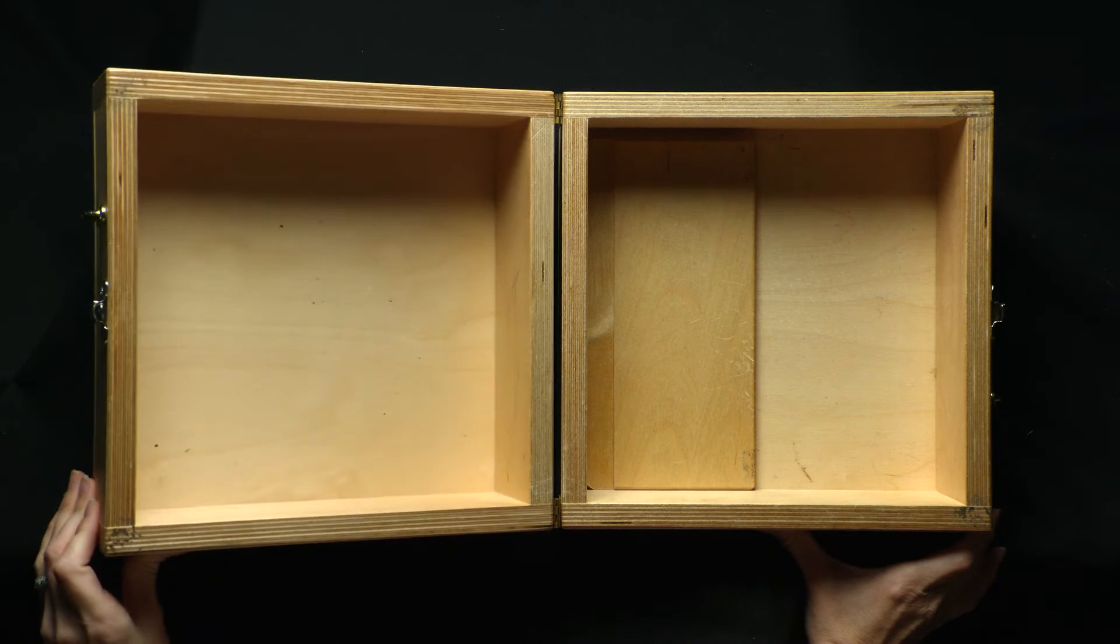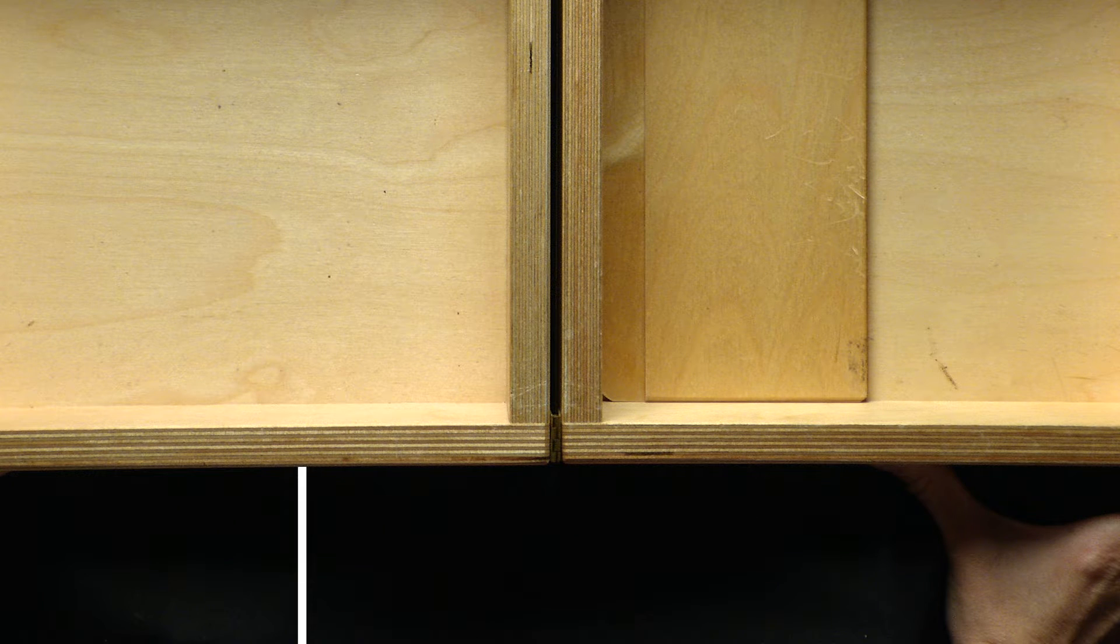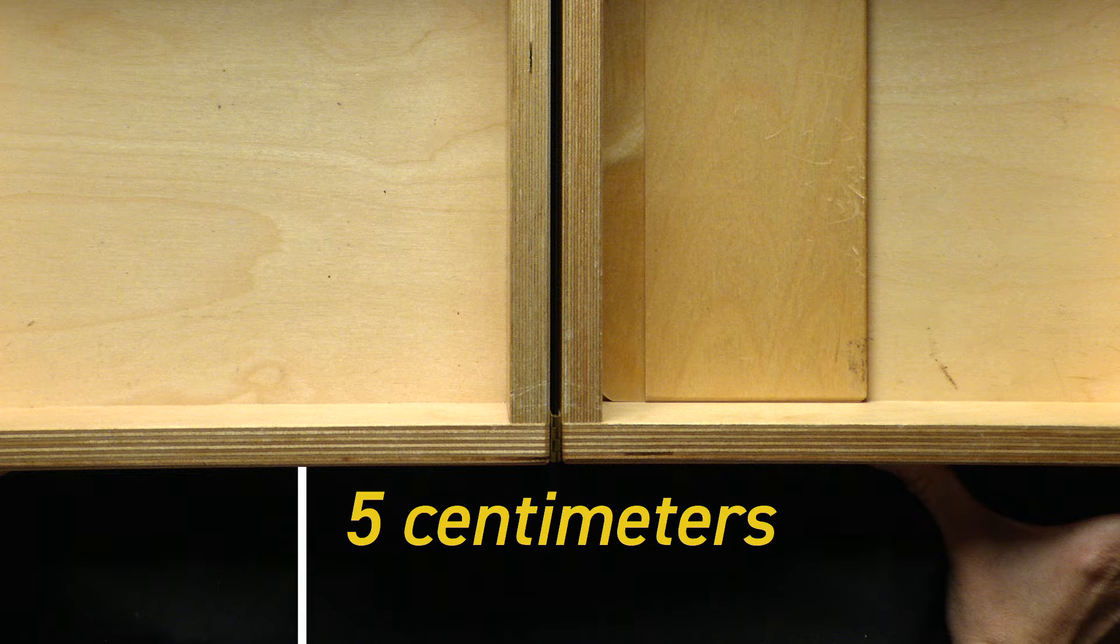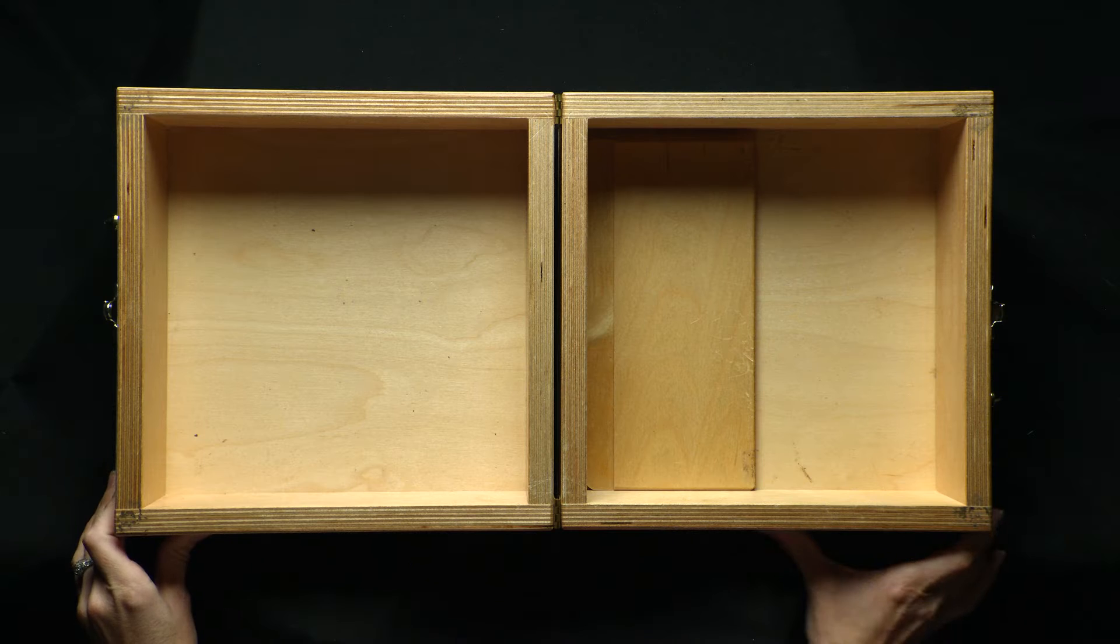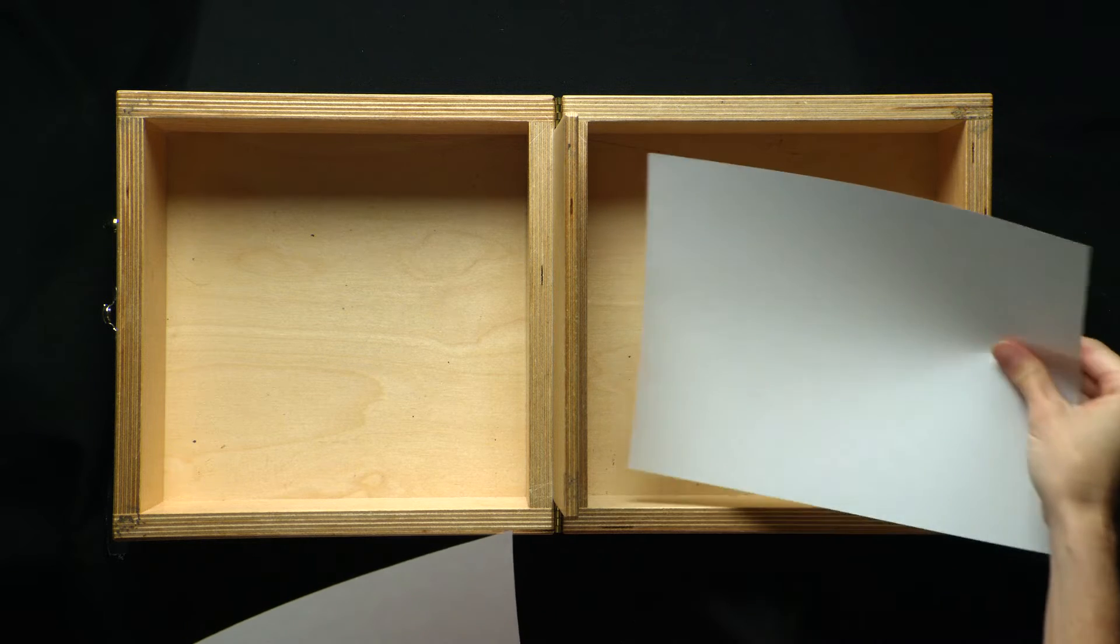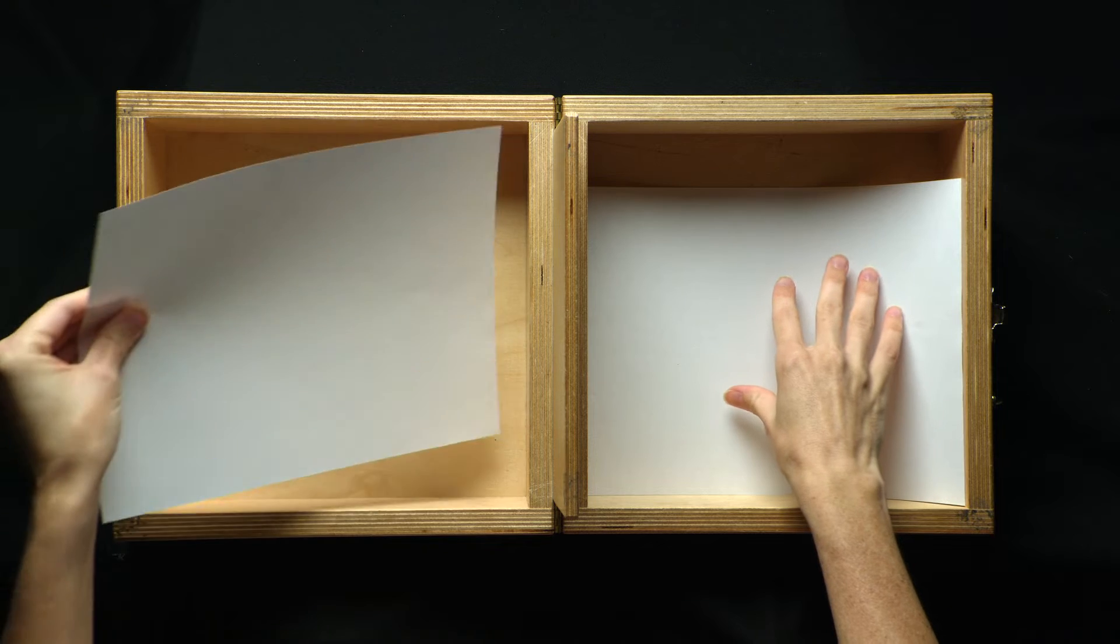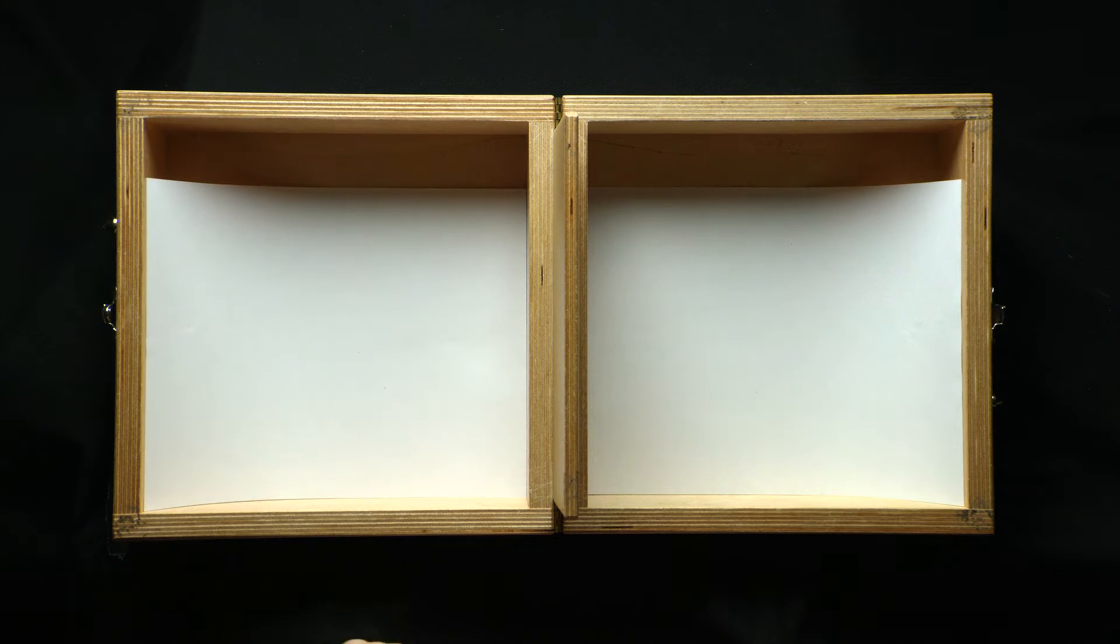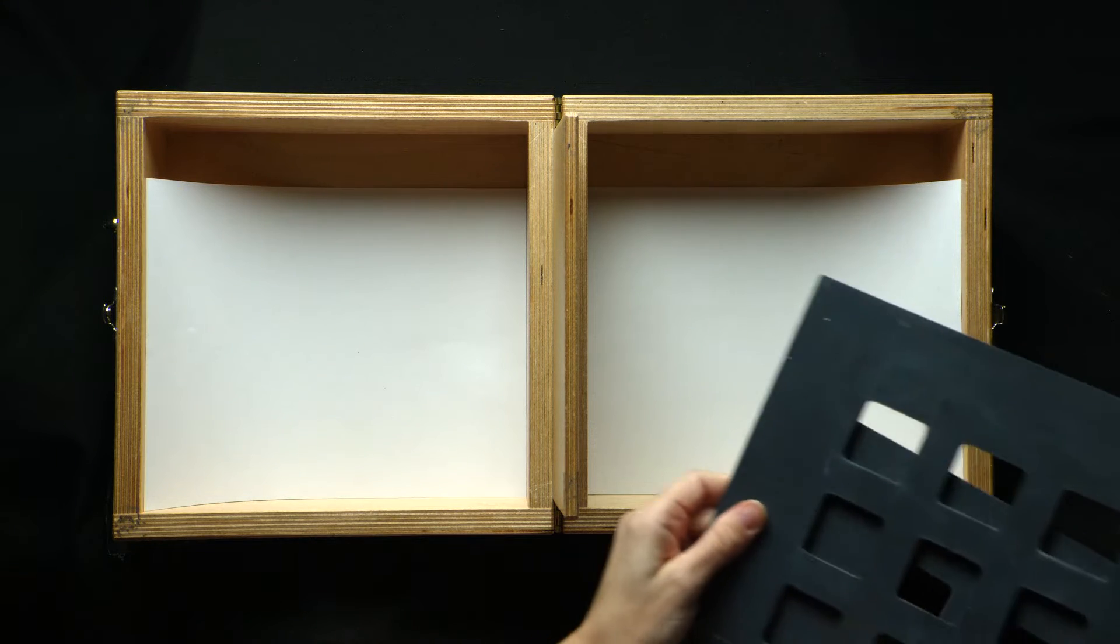To start, place the Box and Blocks Test box on the table so that the edge of the box closest to the patient or participant is five centimeters from the edge of the table. Then place the partition in the middle of the box. Next, place one sheet of white paper within each side of the box.